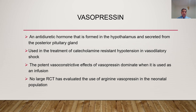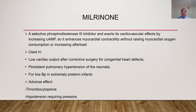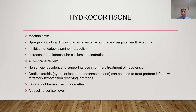Milrinone is a selective phosphodiesterase-3 inhibitor that exerts cardiovascular effects by increasing cyclic AMP, enhancing myocardial contractility without raising myocardial oxygen consumption or increasing afterload. It is favored by pediatric cardiologists. Its uses include: low cardiac output after corrective surgery for congenital heart disease, persistent pulmonary hypertension of the neonate, and low blood pressure in extremely preterm infants. Major adverse effects are thrombocytopenia and hypotension requiring vasopressin, so it is not preferable to start milrinone before starting pressors.